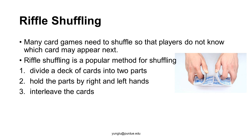Riffle shuffling has three steps. The first step divides a deck of cards into two parts. The two parts are held by the left hand and right hand. The third step releases the cards so that they interleave, usually by the thumbs.